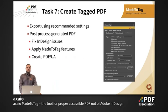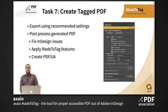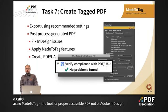The last task in Me2Tag is creating the tagged PDF export. Me2Tag exports the InDesign document with the recommended settings, and also post-processes the generated PDF to fix InDesign issues — for example, links that InDesign creates that are not compatible with the PDF UA standard. It also applies Me2Tag features such as the table tags and form fields to the PDF. In the end, the tagged PDF is fixed to be compatible with the PDF UA standard, so after checking it in PDF Toolbox or Acrobat preflight, there shouldn't be any problems, and the document is ready to go.